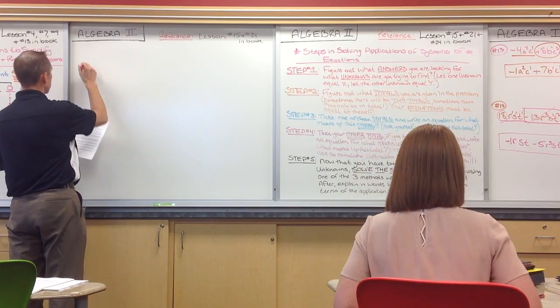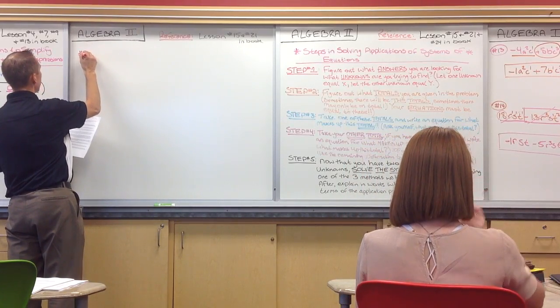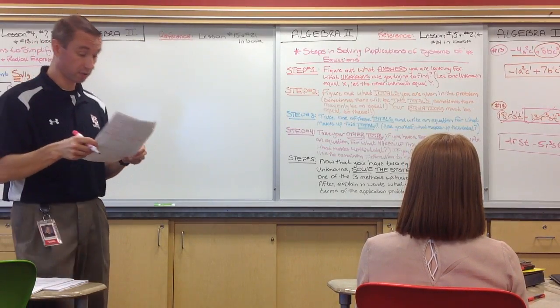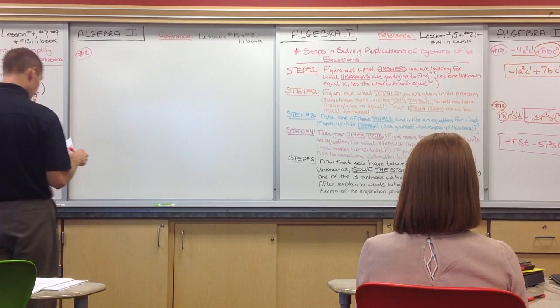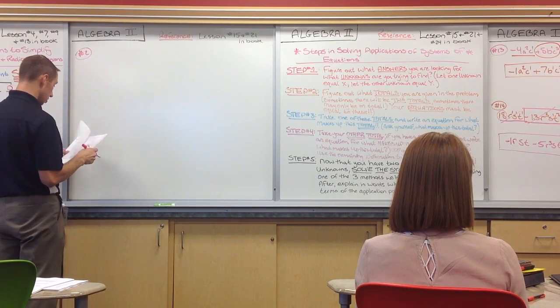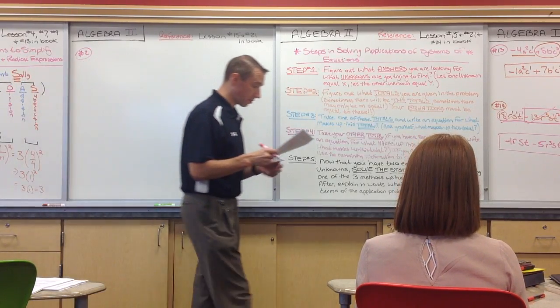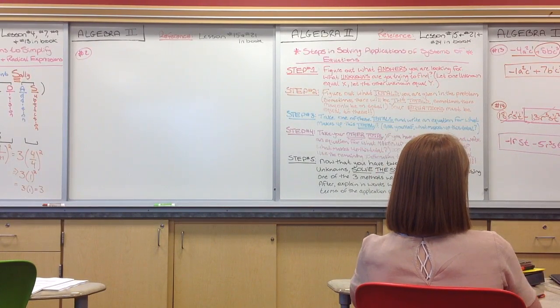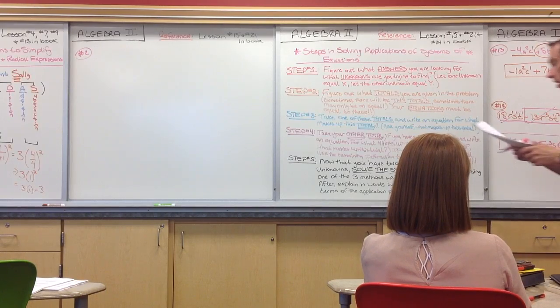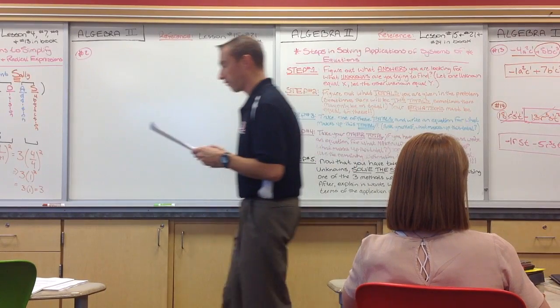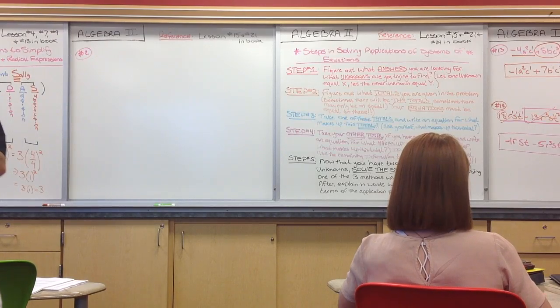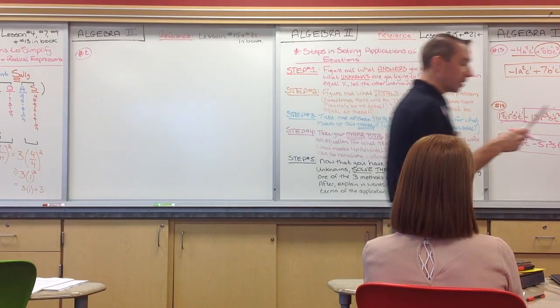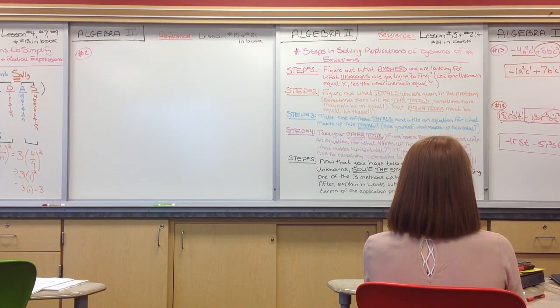So let's take a look at number 2 real quick. If you've already done number 2, then let's just make sure your answers are the same. Number 2 says an investor buys a total of 360 shares of two different stocks. The price of one stock is $35 per share, while the other stock is $45 per share. The investor spends a total of $15,000. How many of each share of each stock did the investor buy?